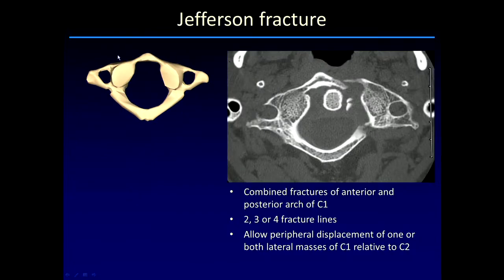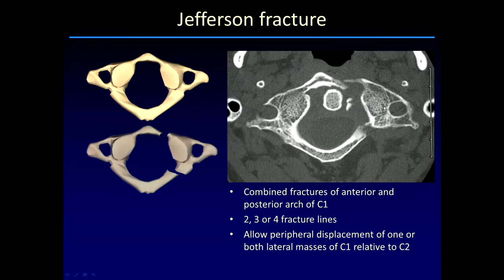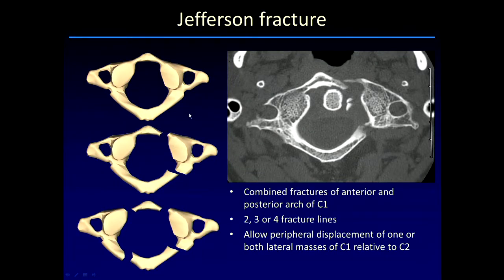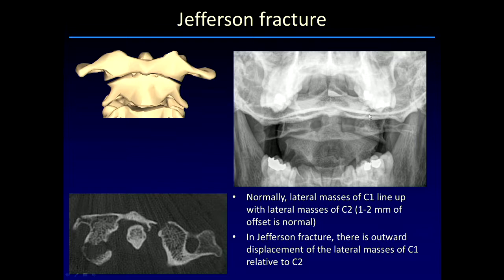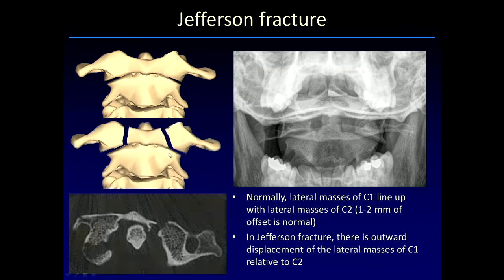The ring of C1 can also fracture. Typical fractures are either isolated to the posterior arch, which behave in a very benign fashion, or more importantly fractures involving both the anterior and posterior arch — known as Jefferson fractures, with several varieties including patterns with two, three, or four fracture lines. This injury allows the lateral masses of C1 to displace peripherally relative to C2, producing the typical appearance on AP radiographs of malalignment of the lateral masses. The outer margin of the lateral masses of C1 should normally line up with the outer margin of the C2 vertebral body, and they are displaced bilaterally in the Jefferson fracture.